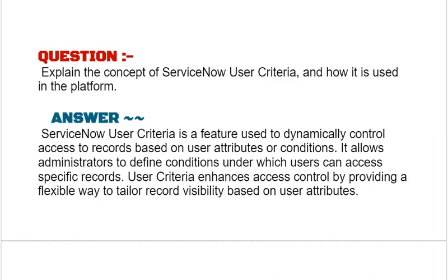Our next interview question is: explain the concept of ServiceNow user criteria and how it is used in the platform. Your answer should be: ServiceNow user criteria is a feature used to dynamically control access to records based on user attributes or conditions. It allows administrators to define conditions under which users can access specific records. User criteria enhances access control by providing a flexible way to tailor record visibility based on user attributes.